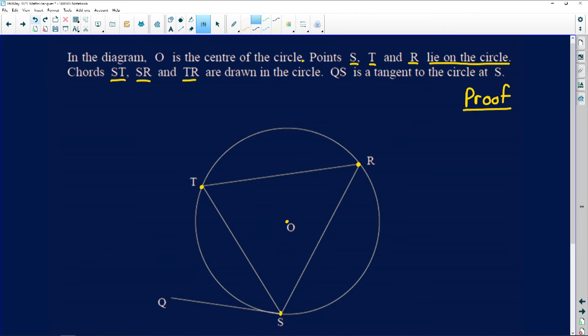They say QS is a tangent to the circle at S. So here comes a tangent - that's definitely given a tangent - and it joins the circle at point S.